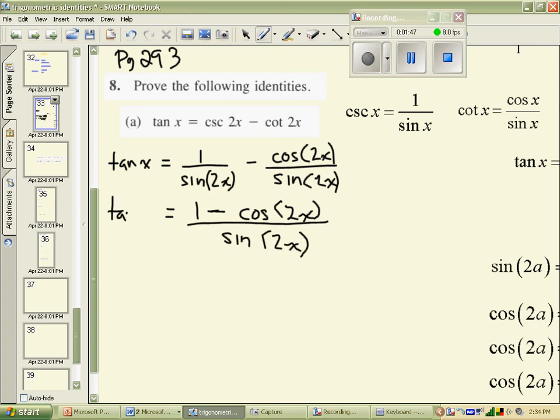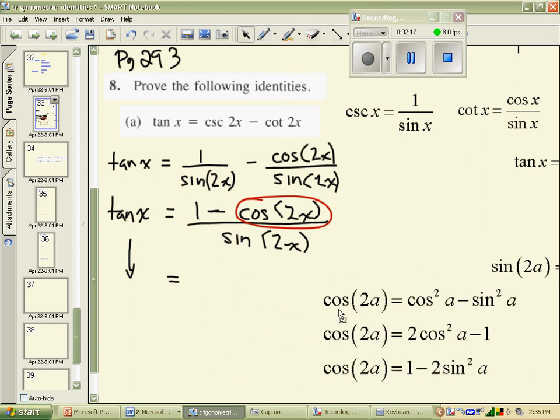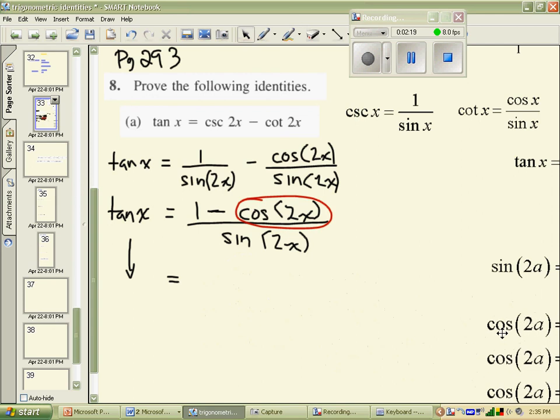Now, cosine of 2x is any one of these three relations. So just the cosine of 2x, I'm going to change into one of these three relations. For no real reason, I'll choose the 1 minus 2 sine squared, just because I see a sine in the bottom, and something magic might just happen there. So we'll move him over, and we will take 1 minus cos of 2x is 1 minus 2 sine squared of x, not 2x anymore.